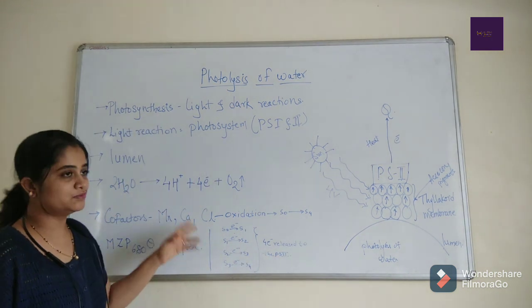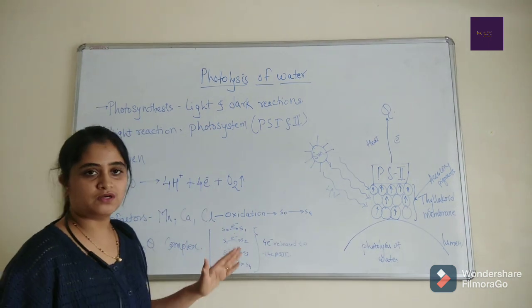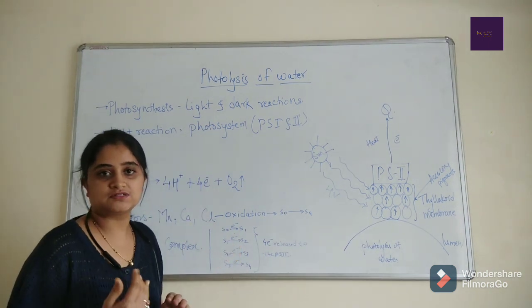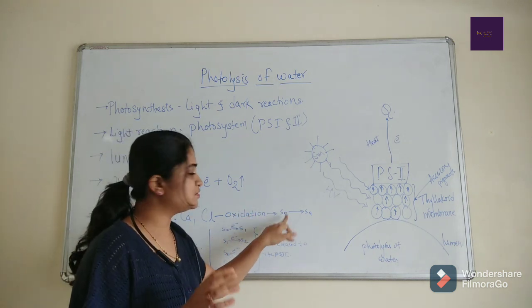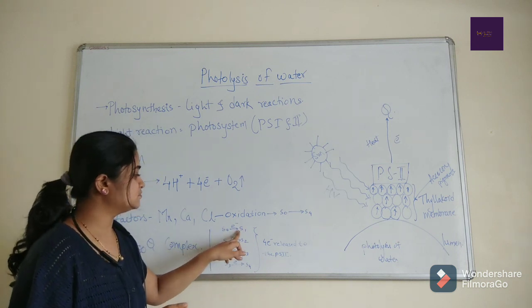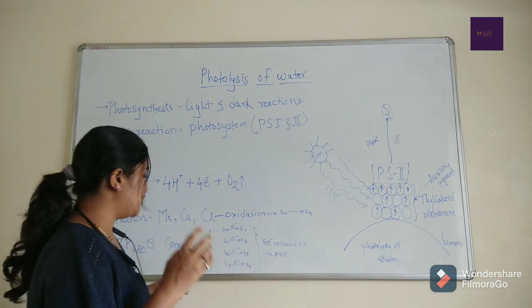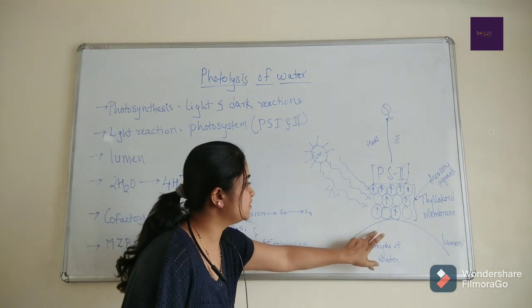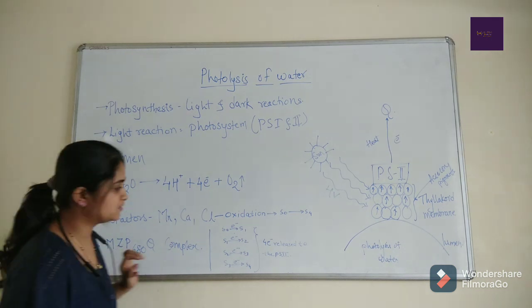The cofactors which are present in the lumen are manganese, calcium, chlorine, and these are present in the lumen which oxidize the water and create stages. It creates the stages, it denotes as S. S0 to S4, there are five stages. In S0 to S1, it transfers one electron, and the donor of electron from the lumen to the PS2 is done with the help of the Z factor.